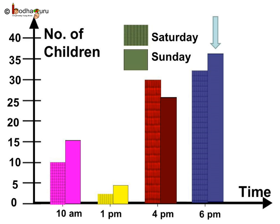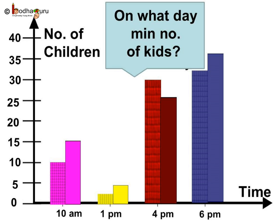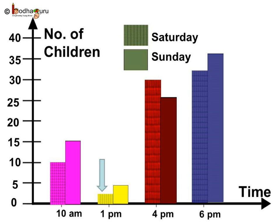Now, seeing this double bar chart, can you tell on what day and time the minimum number of kids were there in the park? The bar with yellow color in checks has the least length, so it was Saturday. Its value is 2, and the time is 1 pm. So we can say the least number of children were in the park at 1 pm on Saturday.